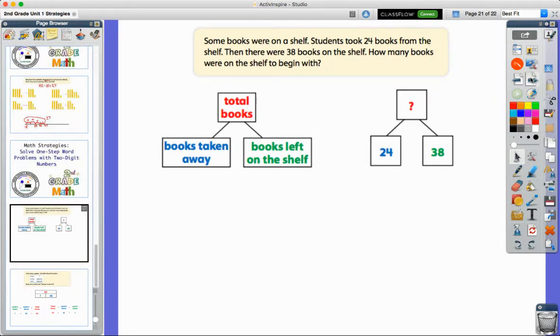So there's a bunch of books on the shelf. I don't know how many. This says students took 24 books from the shelf. So let's say there's 24 kids in your class and each one of you goes and takes a book off the shelf. So 24 books have been taken off of the shelf. Now, there are 38 books left. So I can see those 38 are still on the shelf. But the question is, how many books were on the shelf to begin with or how many were there when we started the story?